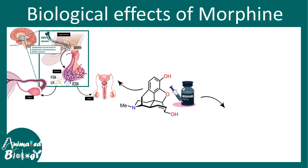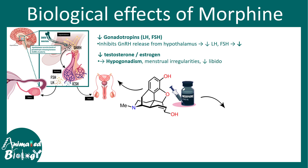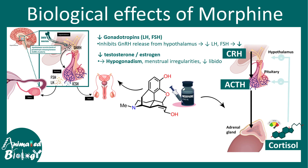Morphine also has effects on our hormonal axes. It can affect the pituitary-gonadal axis by reducing gonadotropin release, so LH and FSH levels are dropped. When LH and FSH are reduced, estrogen and testosterone and other sex hormones are not released in sufficient quantities, leading to menstrual irregularities in women and decreased libido in both sexes. Morphine can also modulate the pituitary-hypothalamus-adrenal axis, which secretes the anti-stress hormone cortisol, leading to decreased cortisol by suppressing CRH and ACTH release.